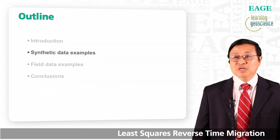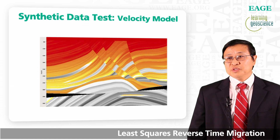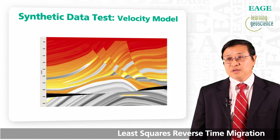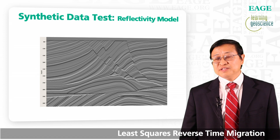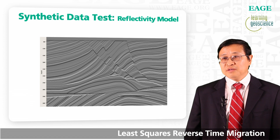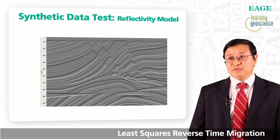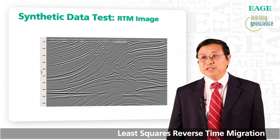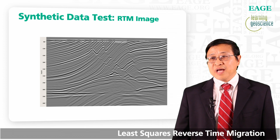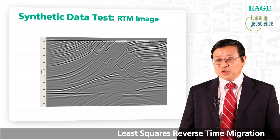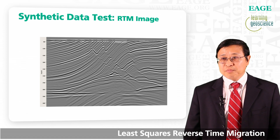Next, I'll show you some synthetic data examples. This is the famous Marmousi dataset. Here is the velocity model and here is the reflectivity model, where black represents positive reflectivity and white represents negative reflectivity. Here is a regular RTM image — it is a pretty good image. However, if you look carefully, the amplitude on the shallow portion is brighter than the deep, and also on the left side the amplitude is dimmed.